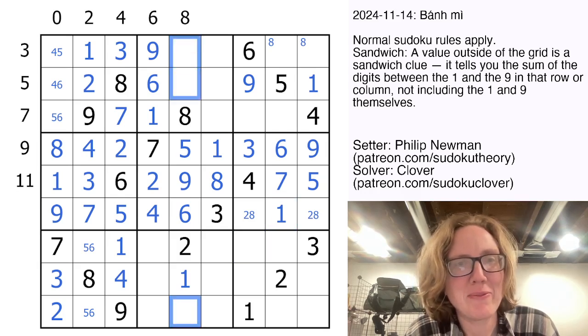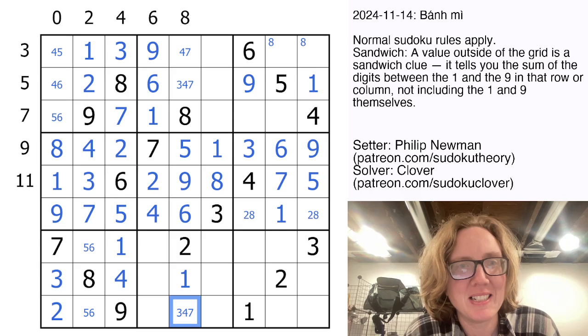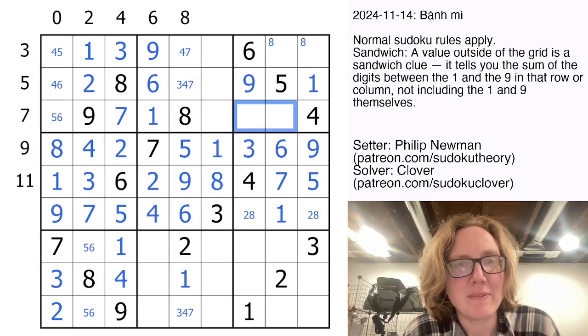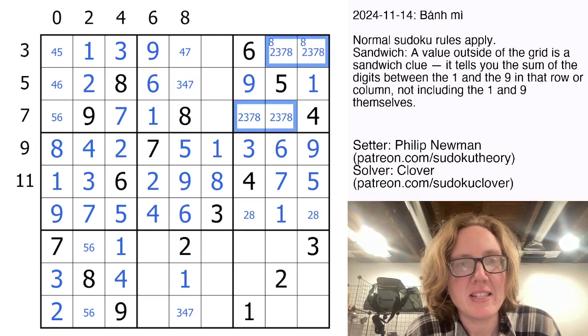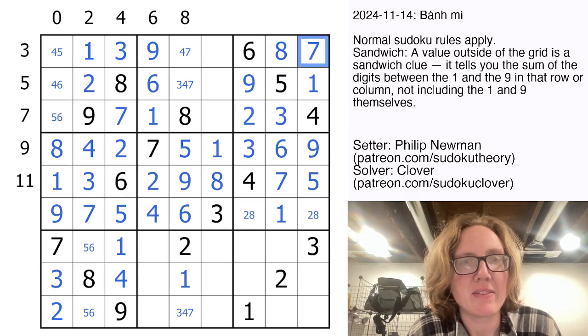So here I need three, four, and seven to finish the column. And to finish this region, I'm going to need two, three, seven, and eight. These can't be two or seven. So that's my eight. That's my three, two, and seven. The seven makes this four.